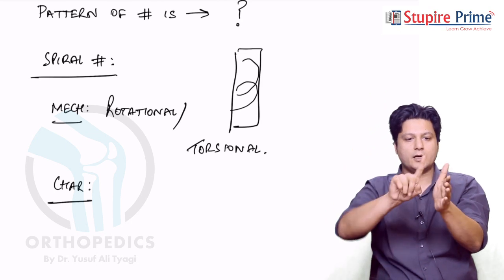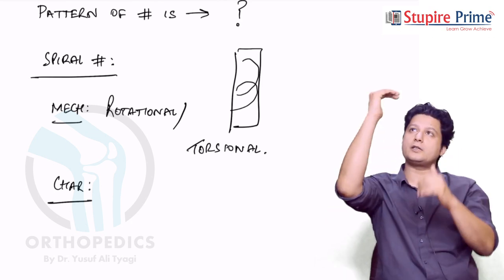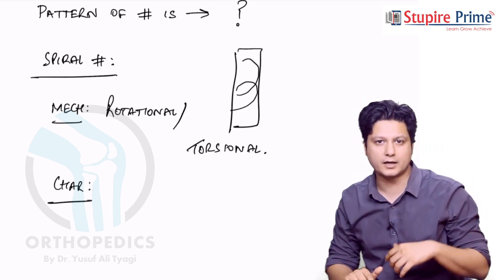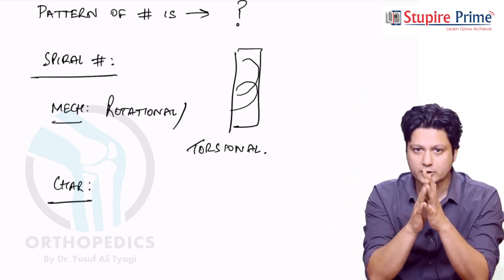So there will be no displacement. And you move a level higher, this time at this level, it is the posterior cortex which is broken but the anterior cortex is intact. As a result of it, there is no displacement.